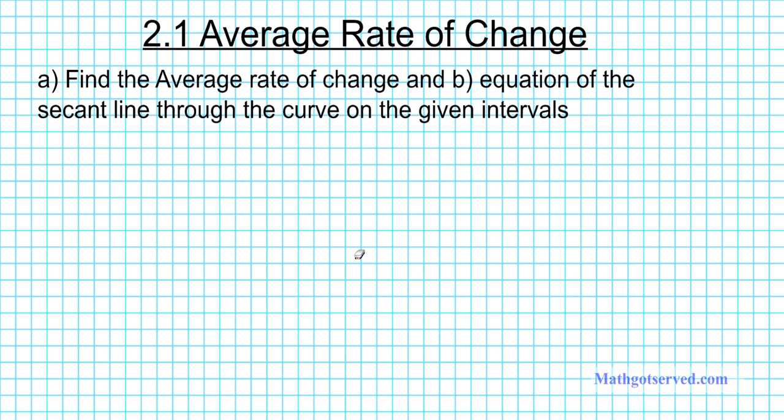Let's take a look at the instructions for the examples we are going to be doing. We are to find the average rate of change and the equation of the secant line through the curve on the given intervals. Before we get started, let's take a look at the formula that will be guiding our problem solving process.